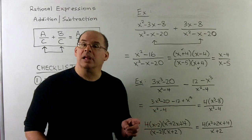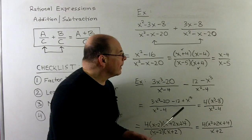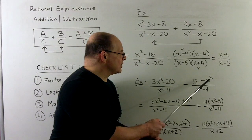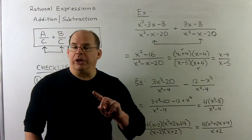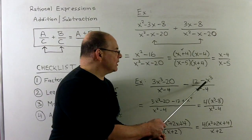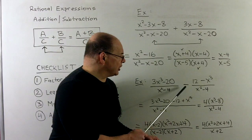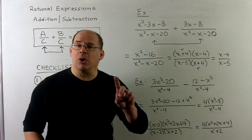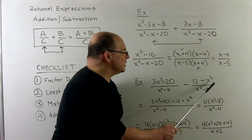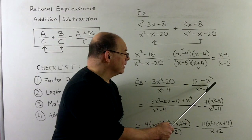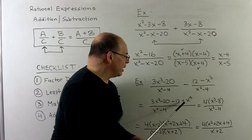Next example: a subtraction. We have 3x³ minus 20 over x² minus 4, minus (12 minus x³) over x² minus 4. The denominators match, so we subtract the numerators. But note — with subtraction, the minus sign applies to the entire second numerator, not just the 12. Putting parentheses around it and distributing, minus 12 becomes minus 12, and minus times minus x³ gives plus x³.